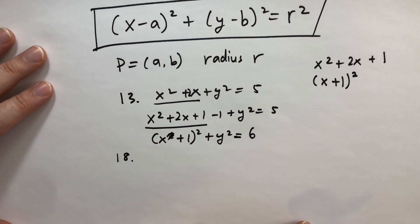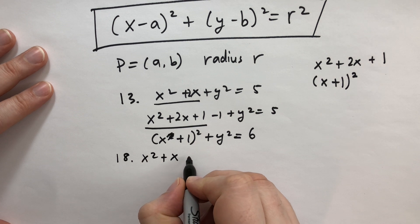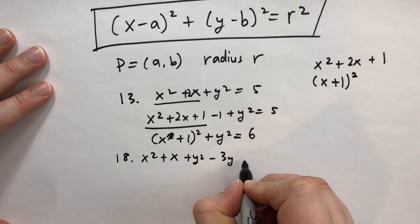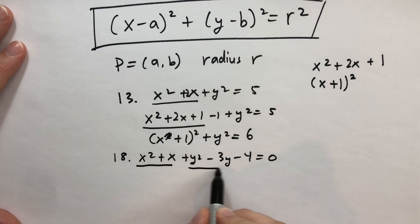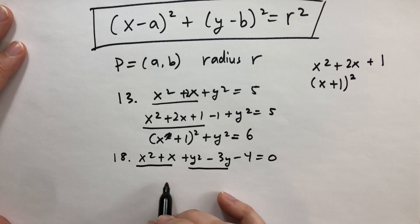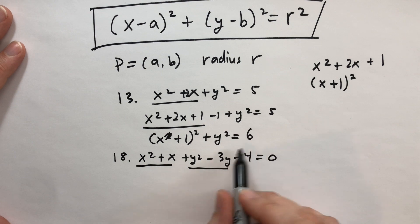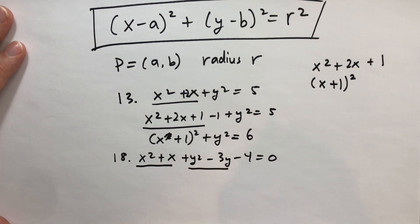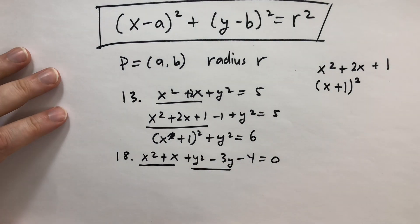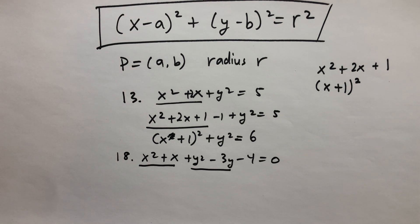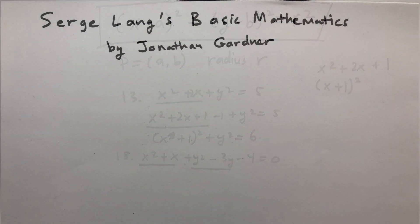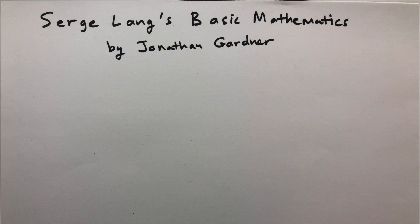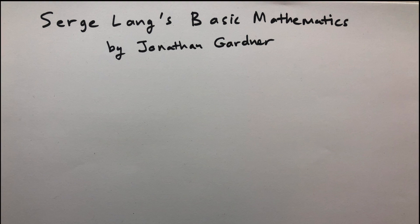Let's look at problem 18: x squared plus x plus y squared minus 3y minus 4 equals 0. We want to get it into standard form. Complete the square for the x terms and for the y terms separately, giving (x plus something) squared and (y minus something) squared. Then move all the leftover terms to the other side to find the radius. Problems 19, 20, and 21 deal with three-space — that should not be too hard. And that's basically it for section 8.3. Thanks for watching — this is part of a series on Sergey Lang's basic mathematics. Take care and bye-bye.